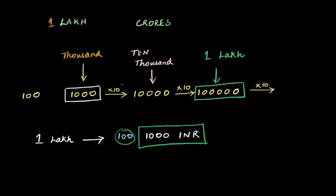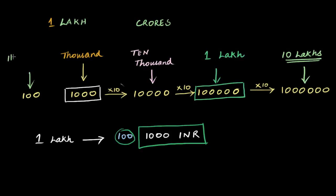Now we could go bigger. If I take one lakh and multiply it by ten, you get one followed by six zeros — that's a seven-digit number. What do we call this? It's a lakh multiplied by ten, so you can guess the name — we call this ten lakhs. So: a hundred, a thousand, ten thousand, one lakh, ten lakhs. You keep multiplying by ten to get to the next number.